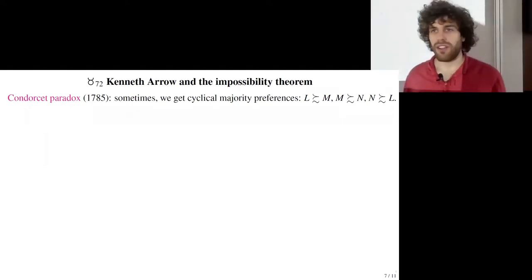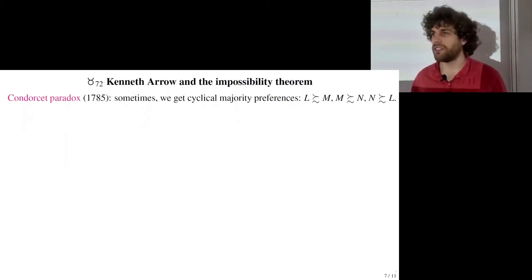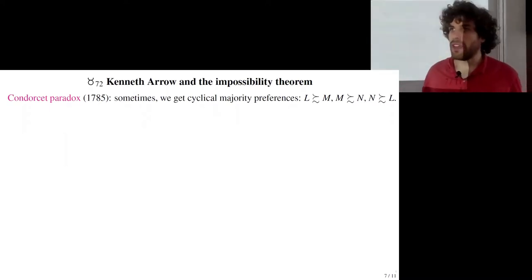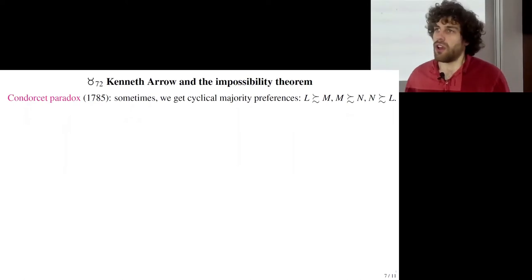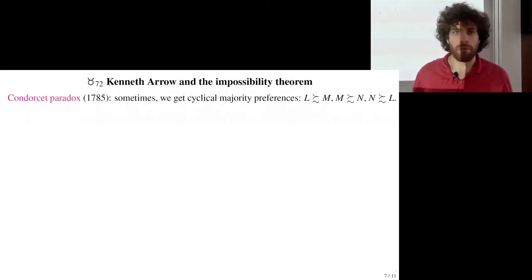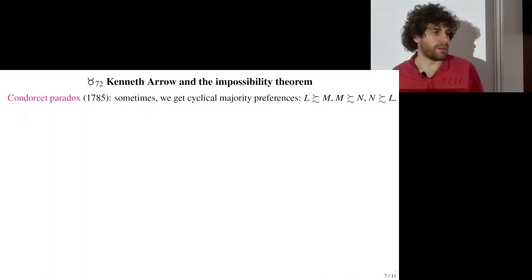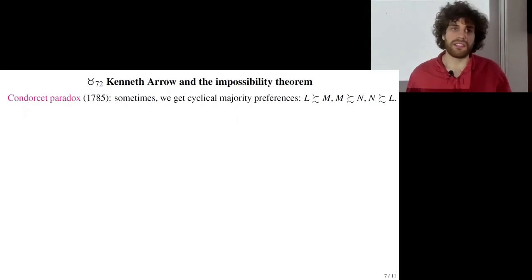Today we'll conclude the class on the foundation of economics, starting with social choice — the field of understanding how to make collective decisions, specifically how to aggregate individual preferences into collective preferences. This question was first studied by the Marquis de Condorcet right before the French Revolution. He proposed the Condorcet method: when a candidate wins in every duel by a majority of votes against each other candidate, that candidate is elected.